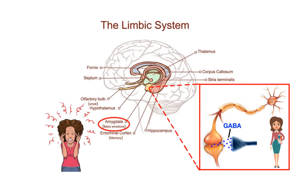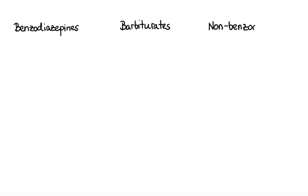In addition to a distinct binding site for the neurotransmitter GABA, the GABA-A receptor also has a site at which anxiolytic and hypnotic drugs bind. These drugs can be divided into three groups: benzodiazepines, barbiturates, and non-benzodiazepine hypnotics.